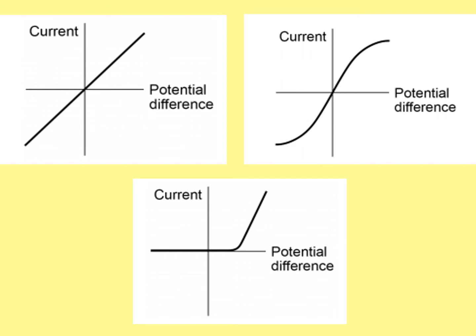These are the graphs you need to recognise from earlier in the unit. They're called IV curves because the I comes from the current and the V comes from the potential difference. You need to recognise the shape of all three graphs. The one on the top left is my IV curve for a resistor. You can tell this is a resistor because it's a straight line and it passes through the origin. We call this an ohmic conductor, because it obeys Ohm's law — that current is directly proportional to potential difference. So if it's a straight line through the origin, that is ohmic.